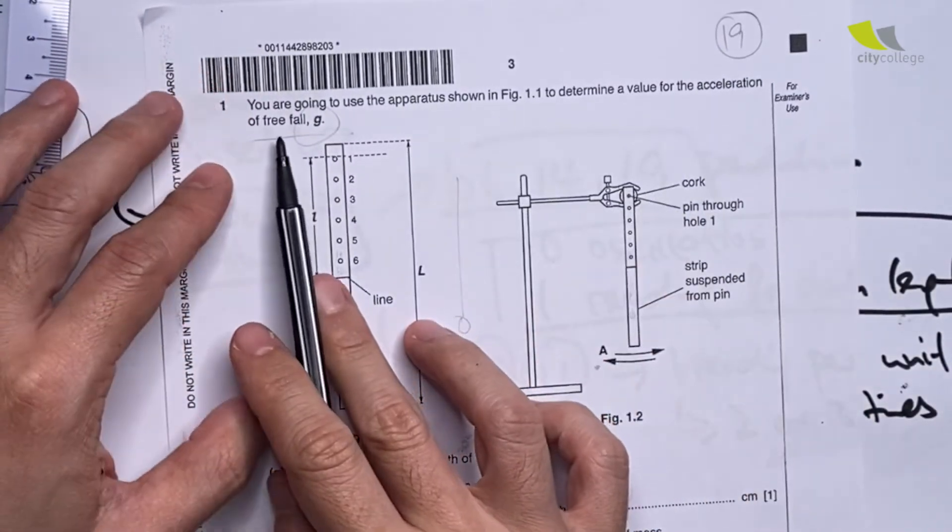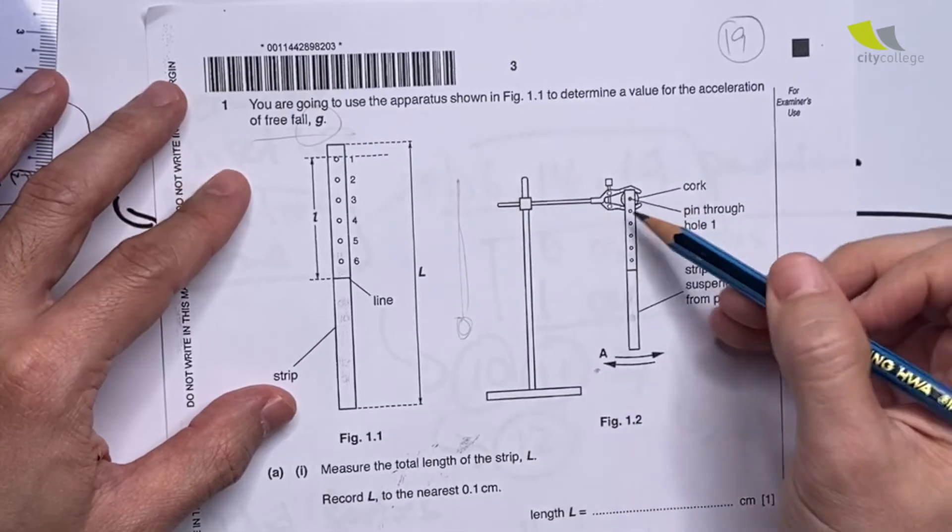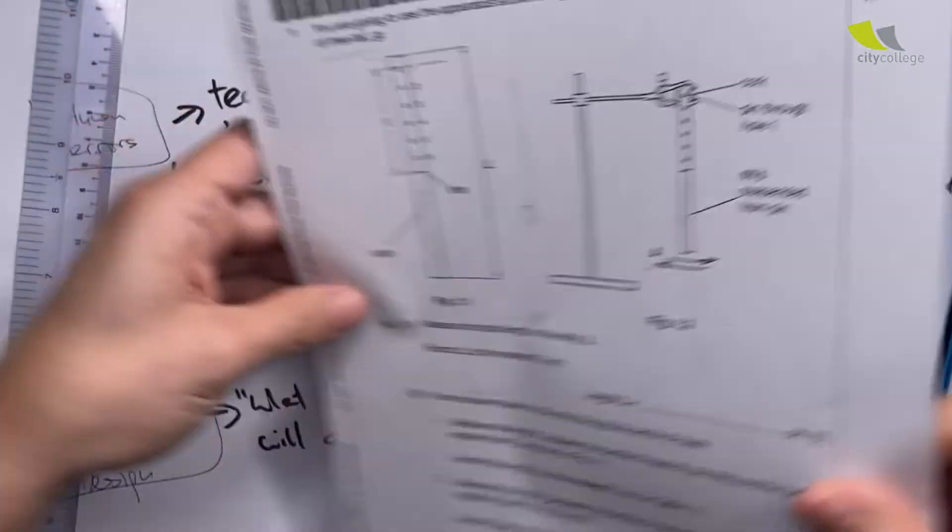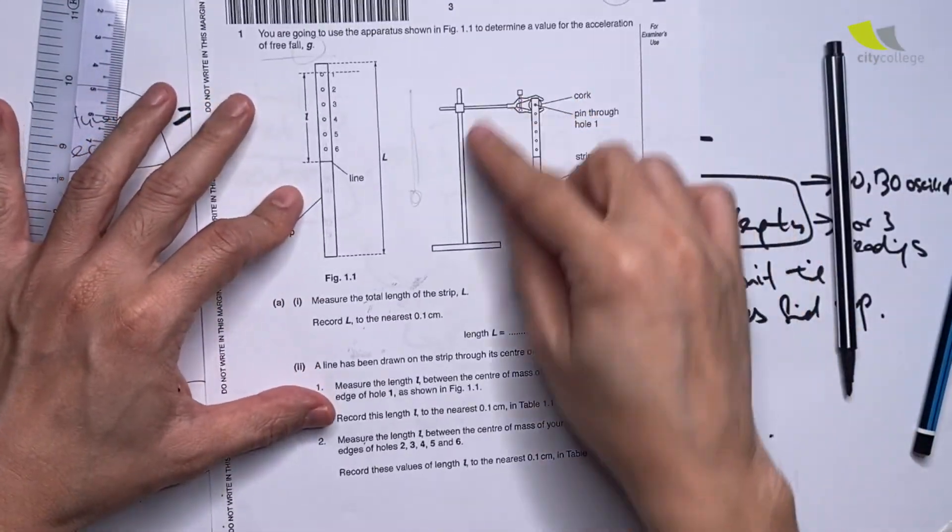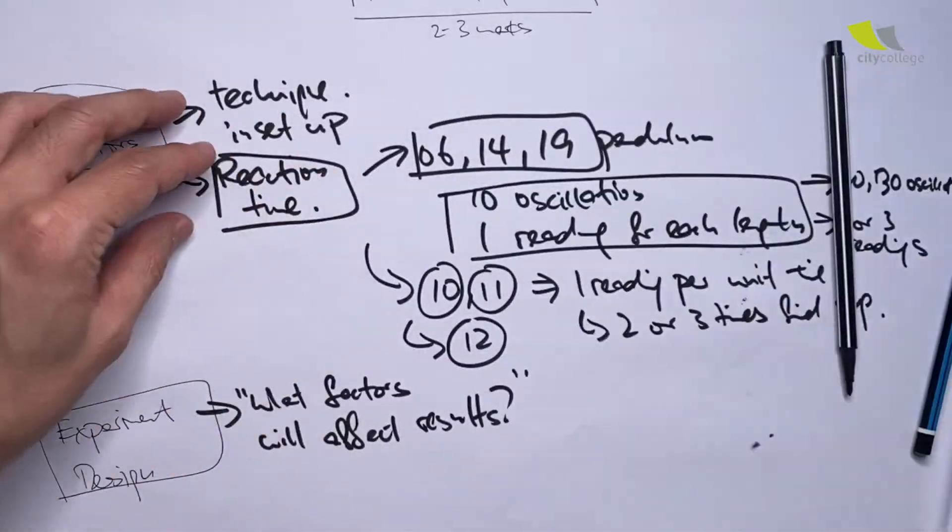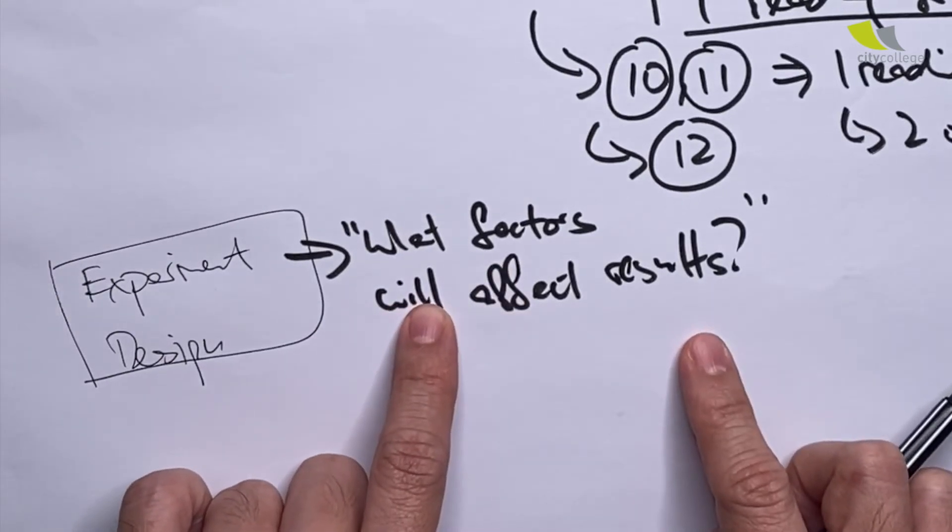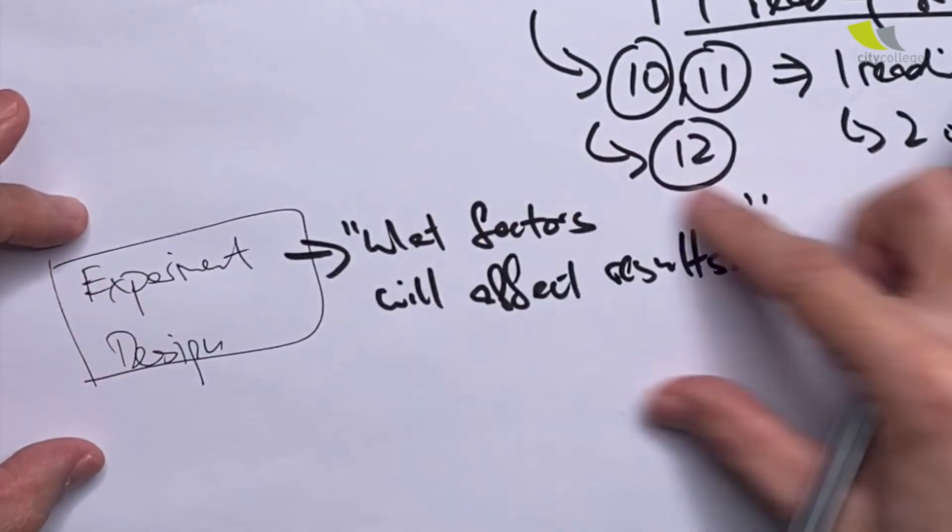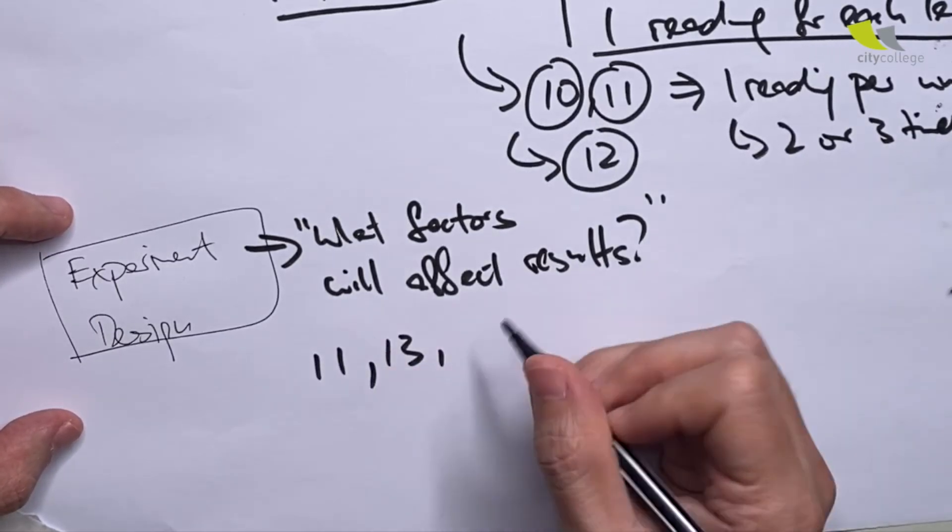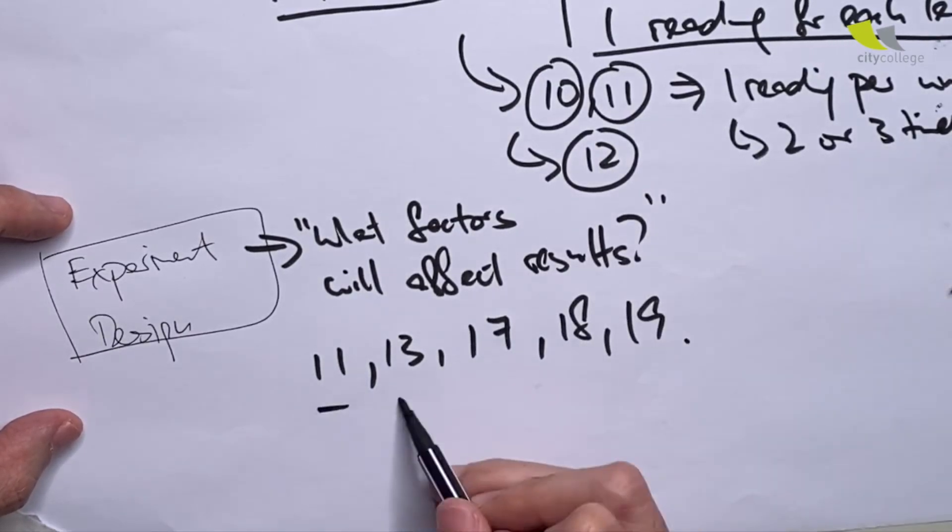In 2019, you find the value of acceleration g, but instead of using the string, we use a strip of paper. When you use the strip of paper, there's a much larger surface area, so it's going to encounter more air resistance, and that is going to affect the speed of swing and your value for g. All these are questions where experiment design consists of factors that will affect the results. These are the other group of errors. This is relatively harder. We have it in 2013, 2011, 2017, 2018, 2019 - kind of quite popular. But you see, reaction time is also fairly popular.